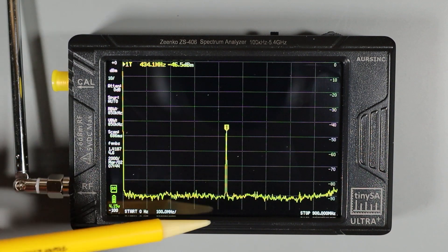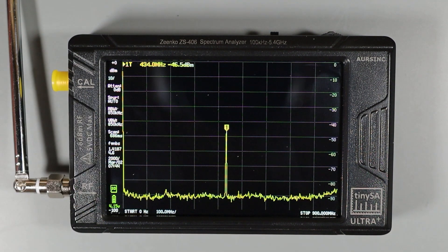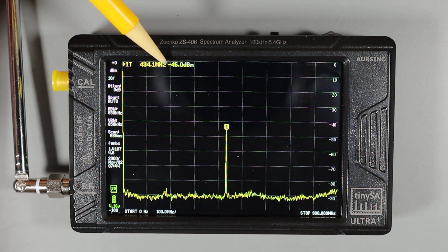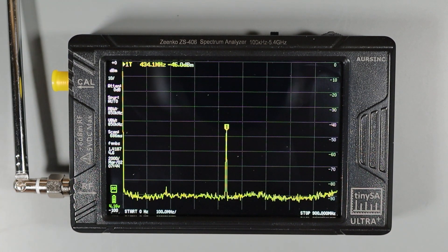When I activate the key fob, you can see the signal spike here and it's being measured at 434 megahertz with a strength of minus 46 dBm.